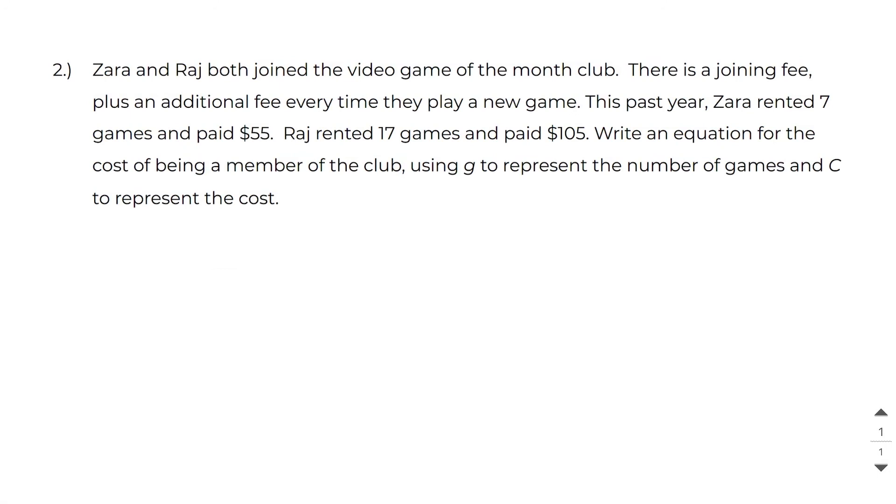In this next example, we're told that Zara and Raj both joined the video game of the month club. There's a joining fee plus an additional fee every time they play a new game. So this past year, we're told that Zara rented seven games and paid $55 and that Raj rented 17 games and paid $105. We want to write an equation for the cost of being a member of the club using G to represent the number of games and C to represent the cost.